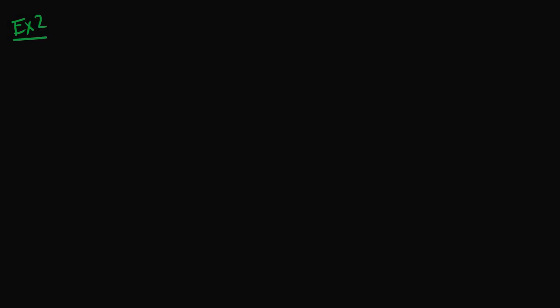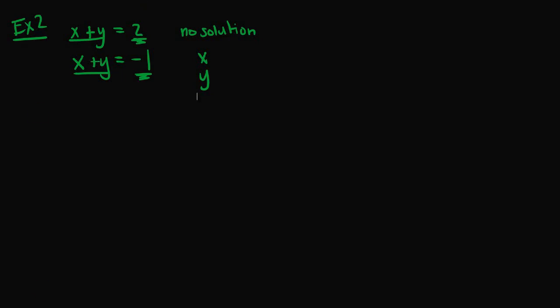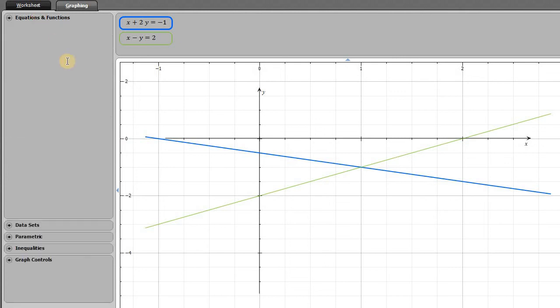For example two, consider the system x plus y equals two and x plus y equals negative one. Immediately you can see the left-hand sides of both equations are identical. There is no x and y value you could plug into both equations to get two for one and negative one for the other — both equations cannot equal two and negative one simultaneously. So this system has no solution.